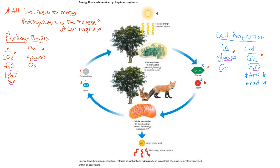In terms of energy, that's what changes. In photosynthesis, we get the energy from the sun. In cell respiration, the energy is in another form — it's ATP and heat. But everything else is the same, so just think of it as the reverse.